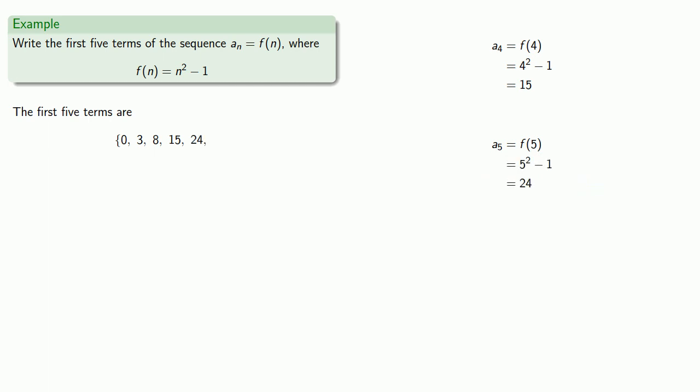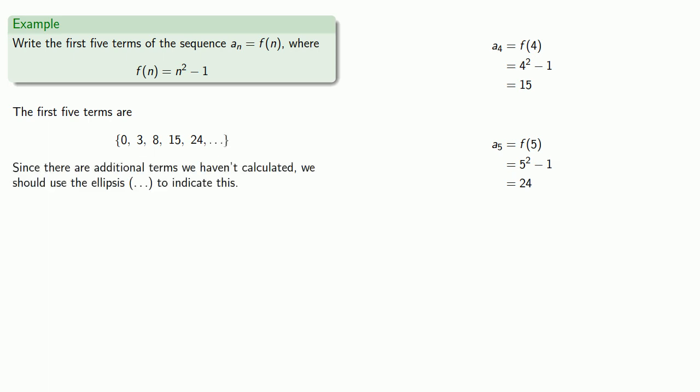Since there are additional terms we haven't calculated, we should use the ellipsis — the dot, dot, dot — to indicate this. Now there are many, many different sequences, but there are a couple of important types of sequences. So let's consider what the sequence zoo looks like.